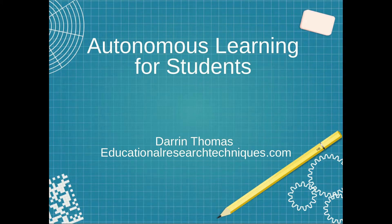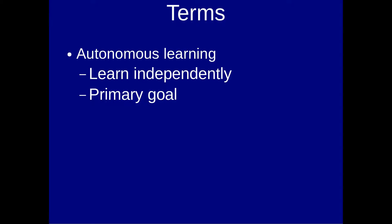Now, that should sound kind of strange to you — helping someone to become autonomous. But even though it seems contradictory to help someone to become independent, there are ways that it can actually be done. So, what exactly is autonomous learning? Autonomous learning is helping someone to become able to learn independently. In other words, you want someone to be able to go from relying on the teacher to learn, to being able to understand how they can learn by themselves. And for many educators, this is the primary goal of education.